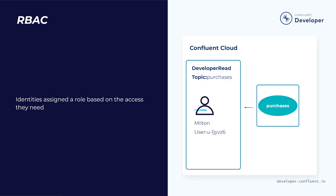Which brings us to the second way of authorizing our principals: role-based access control, or RBAC. RBAC is based on configuring predefined roles within your organization. Identities are assigned to a role and then gain access to an organization, environment, cluster, or specific Kafka resources like topics, consumer groups, and transactional IDs. To use our example from earlier, the user Milton is part of a group of users that have access to read data from our purchases topic, so we add him to the developer read role for that topic.